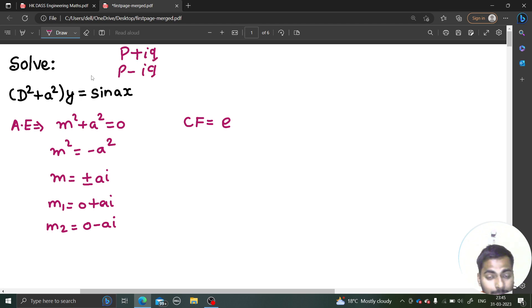So e power real part into x. So e power 0x. Simply, c1 cos imaginary part into x.